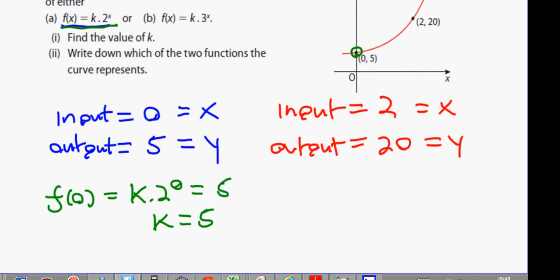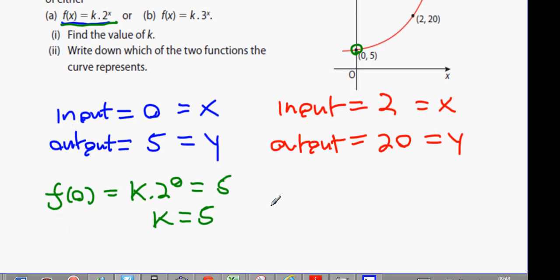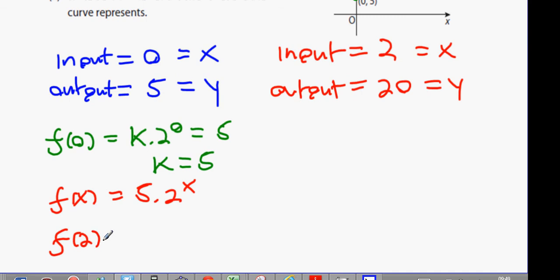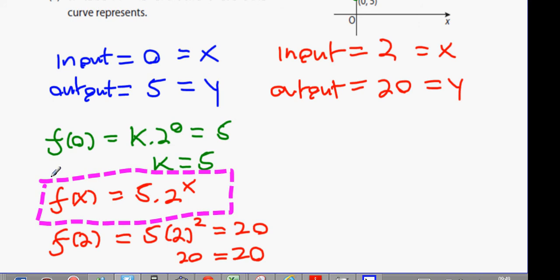Now, let's check out the second value and see if it works for that one. When the input is 2, the output is 20. So what I'm claiming is f(x) is 5 times 2 to the power of x. Let's see what f(2) is. f(2) is going to be 5 times 2 to the power of 2. And what is 2 to the power of 2? 4. What's 5 times 4? 20 equals 20. We can now clearly see that this equation here satisfies both points on your graph. Do you see that?